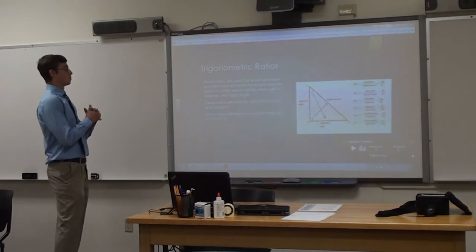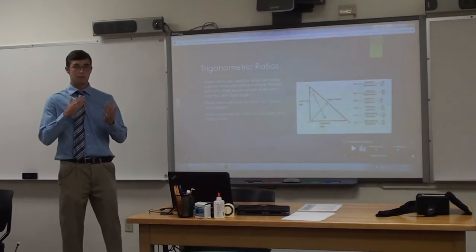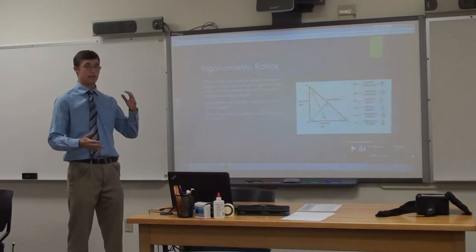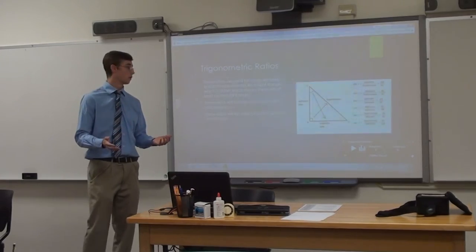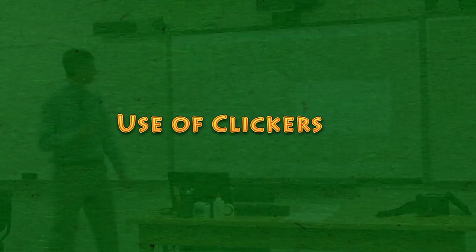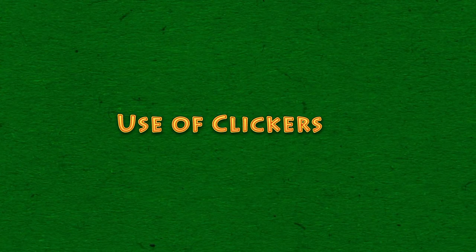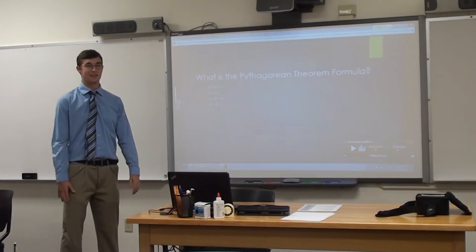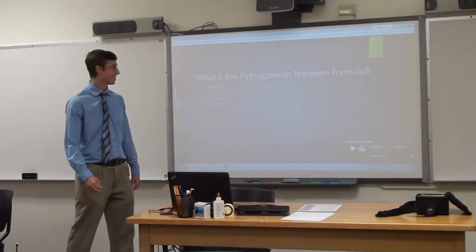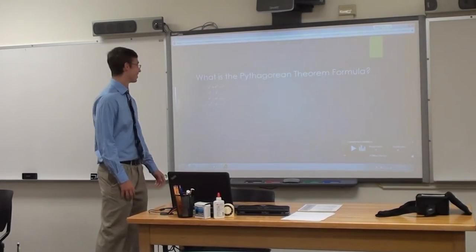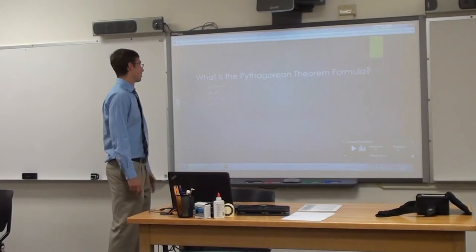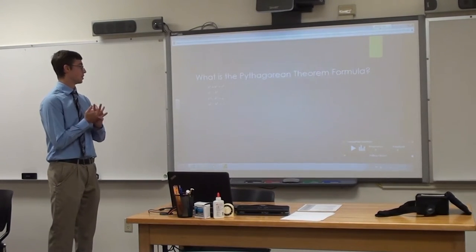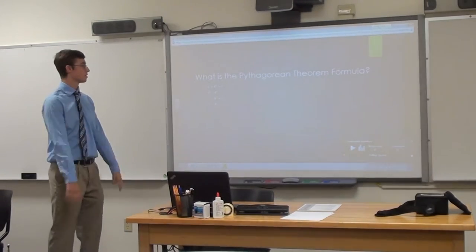Alright, so these ratios are used when we have special measurements. The Pythagorean theorem and these trigonometric ratios can only be used together for a right triangle. Now we're going to take a quiz. I'll give you four options of the equations — see if you guys can remember what the equation was.